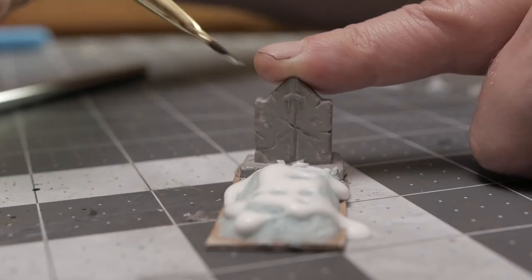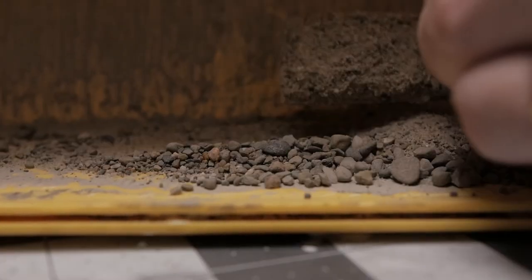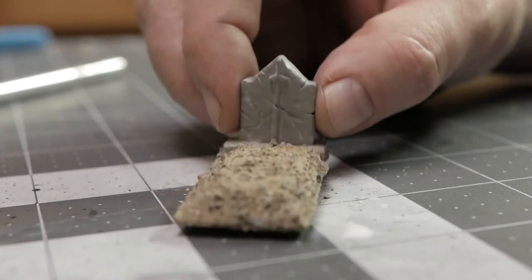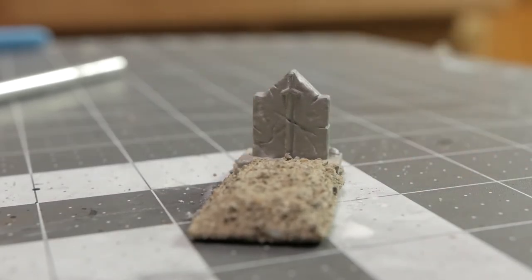And now for the fun part! All you have to do is get some sand or dirt or whatever you want to use as your flocking, sprinkle it on top, just douse it in it, and it will stick to the PVA glue. Give it a little shake and you're pretty much done.